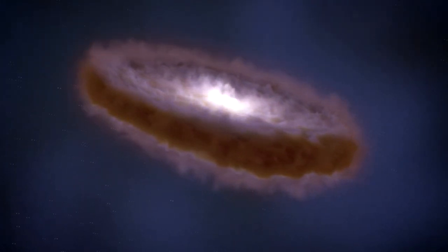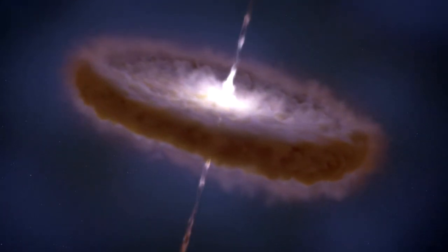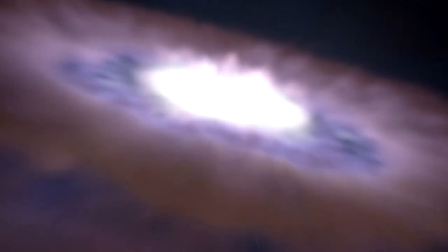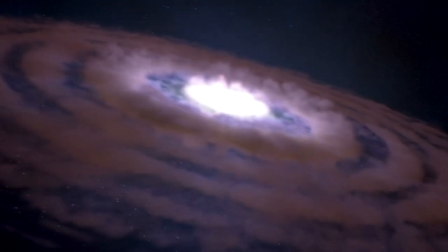In its early years, the sun was surrounded by a protoplanetary disk of gas and dust. Within this swirling disk, dust grains stuck together, forming planetesimals which are the building blocks of planets.